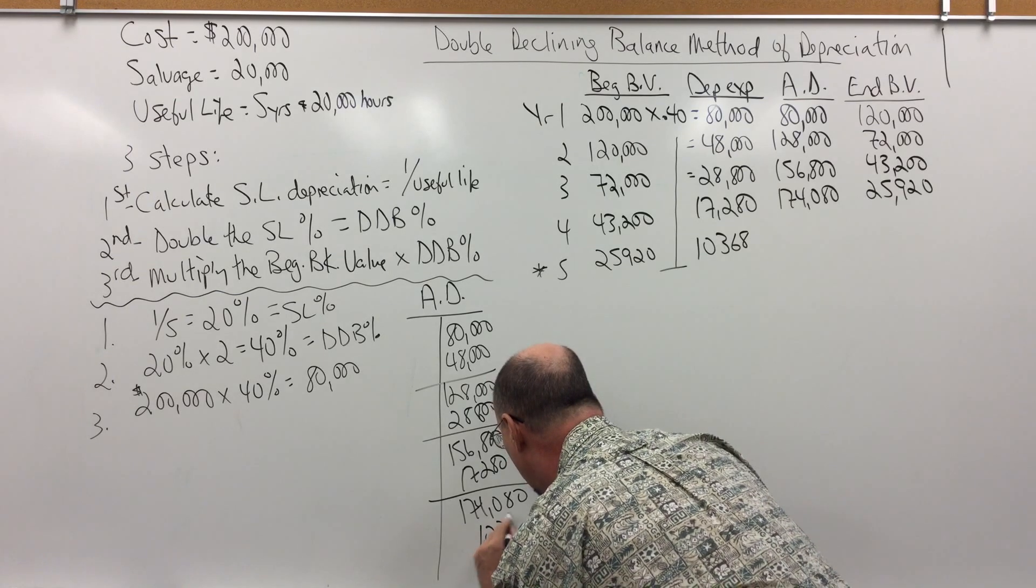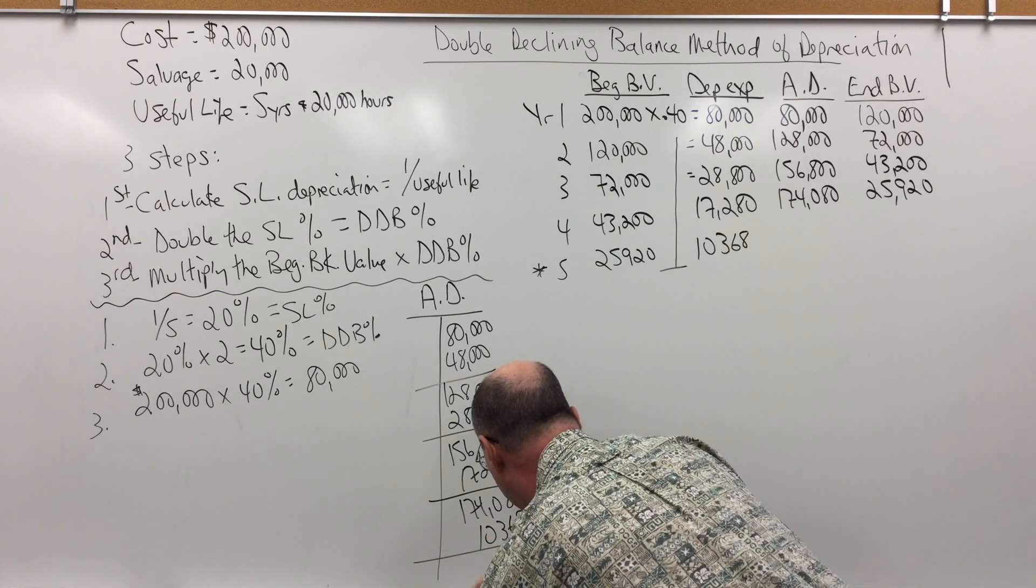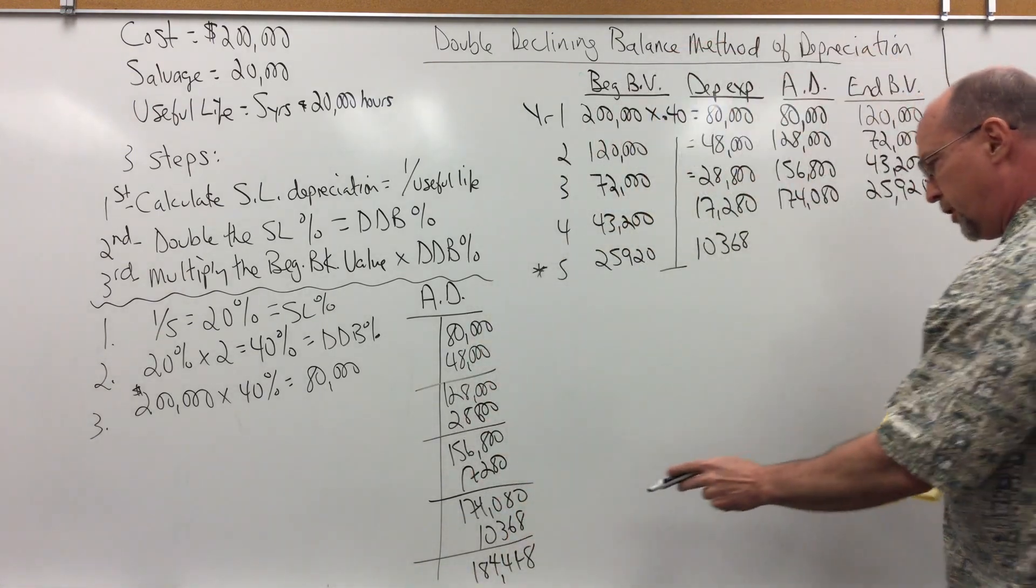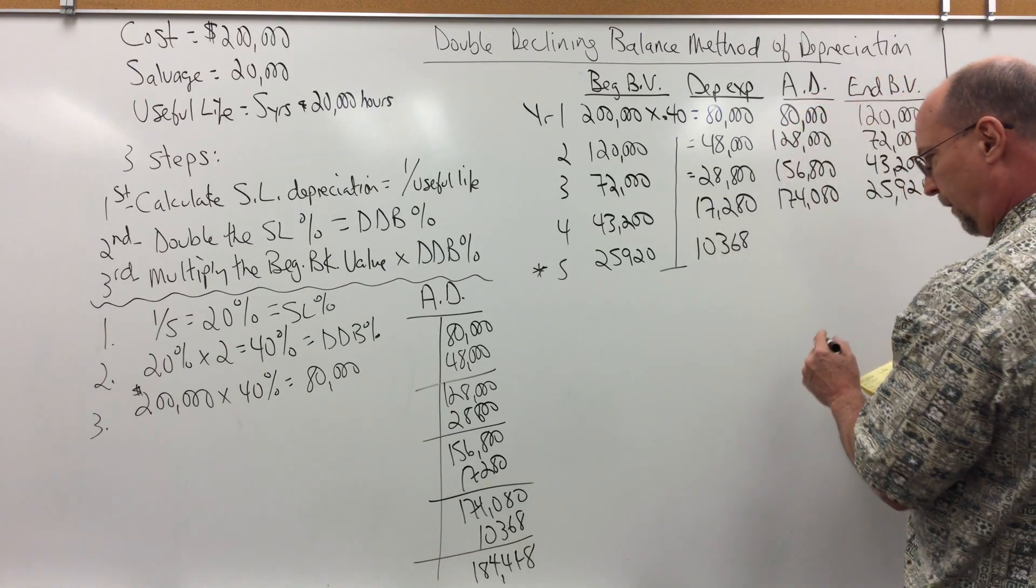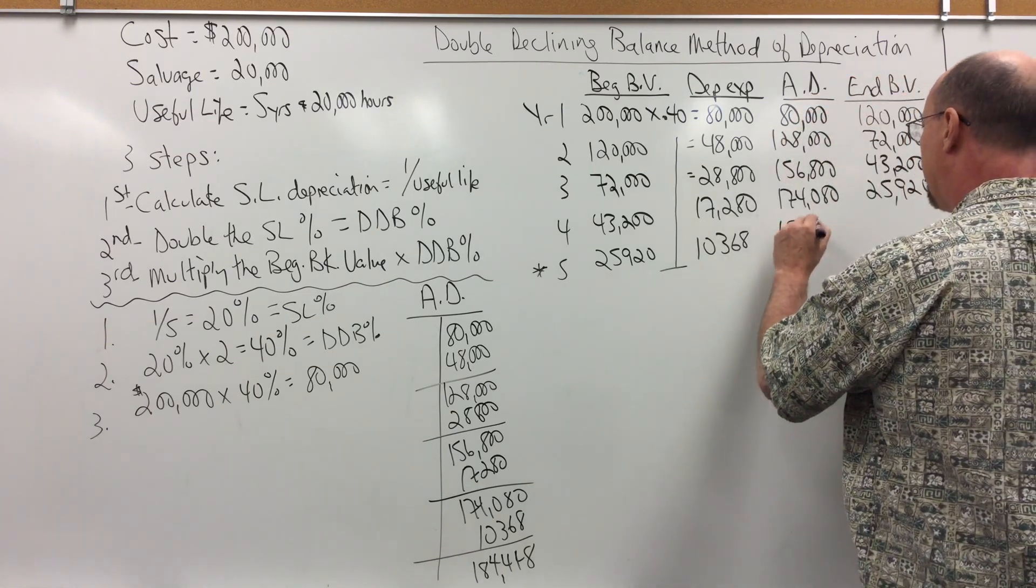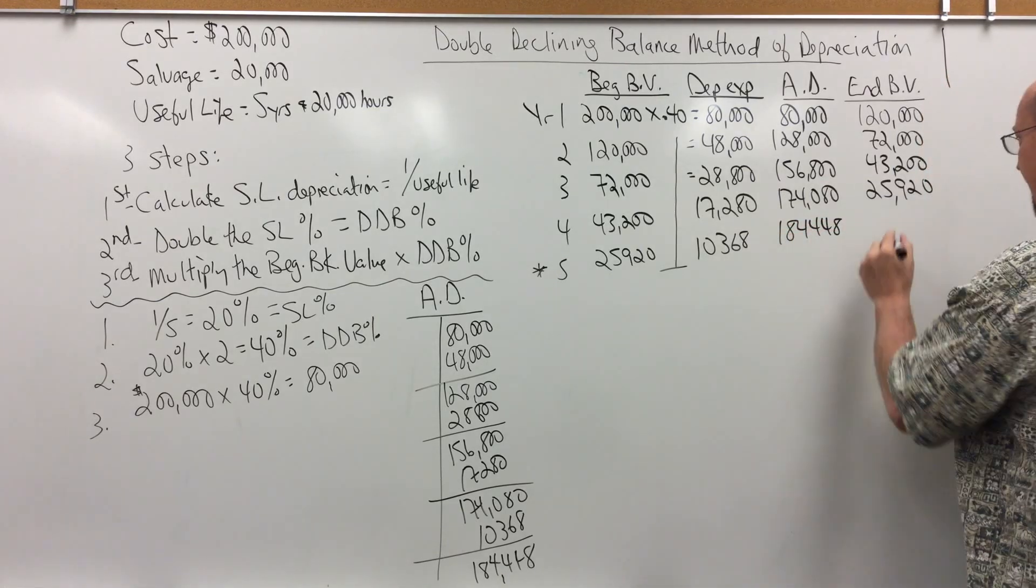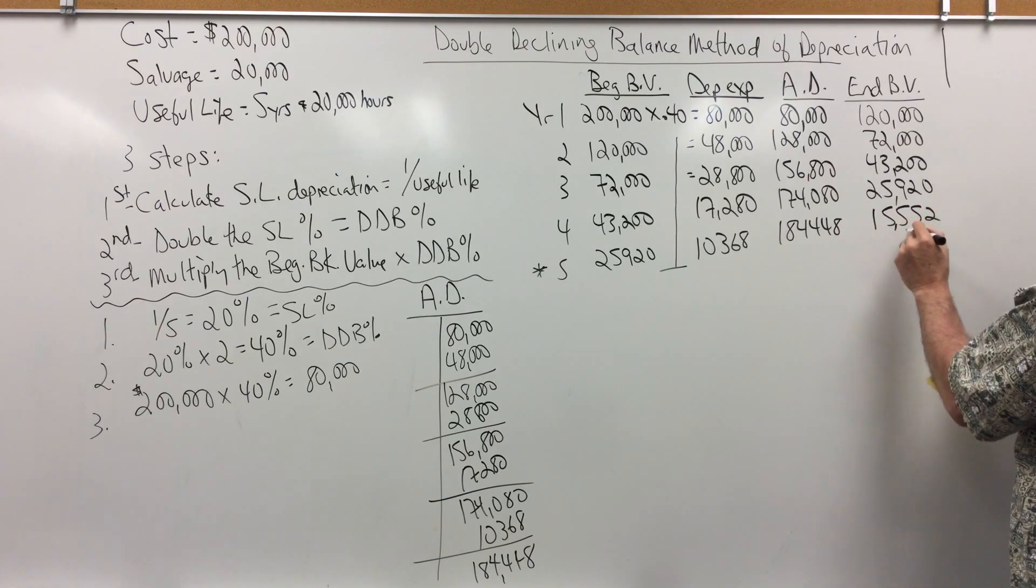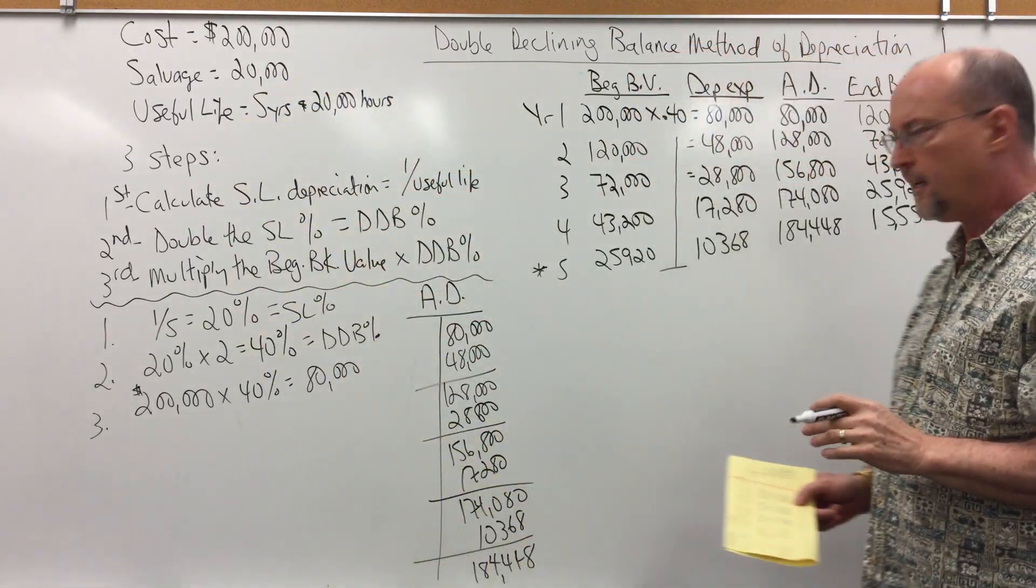Notice my accumulated depreciation would be 184,448. And that would make my ending book value 15,552. Ending book value would be lower than salvage value. We're not allowed to do that.